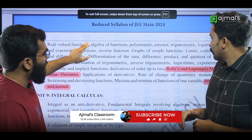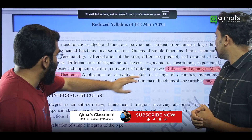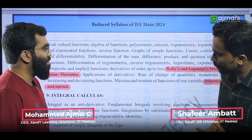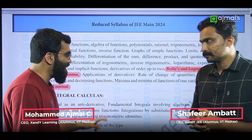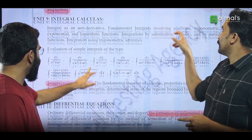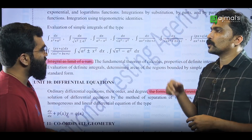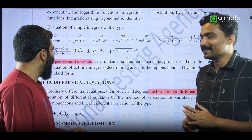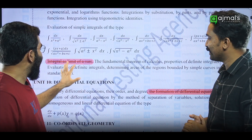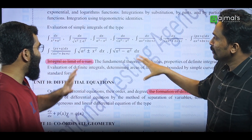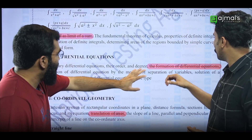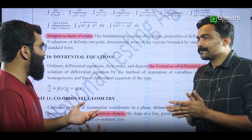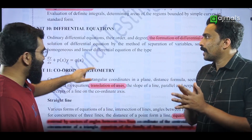It is removed. Limit, continuity, differentiability — Lagrange's mean value theorem — it is also removed. Tangent and normal is also removed. It also has an impact on the sum. Tangents and normals are easy to mark the score but are removed. Integral as a limit of sum is also removed.